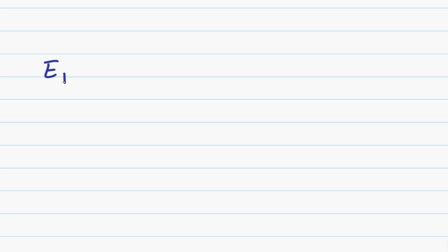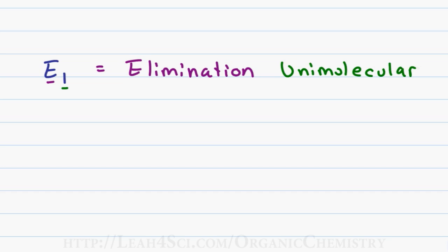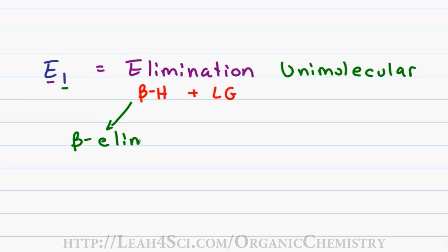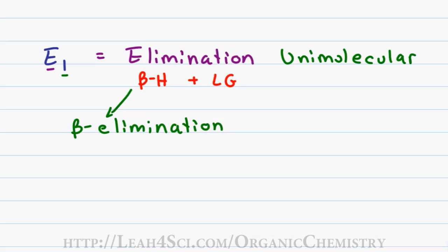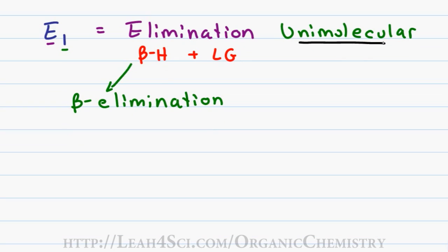The E in E1 stands for elimination and the 1 tells you that this is a unimolecular reaction. Elimination means to remove something, specifically we're getting rid of a beta hydrogen and a leaving group, so this reaction is called beta elimination. Unimolecular does not mean it's a one-step reaction but rather a first order reaction that can involve two or more steps.